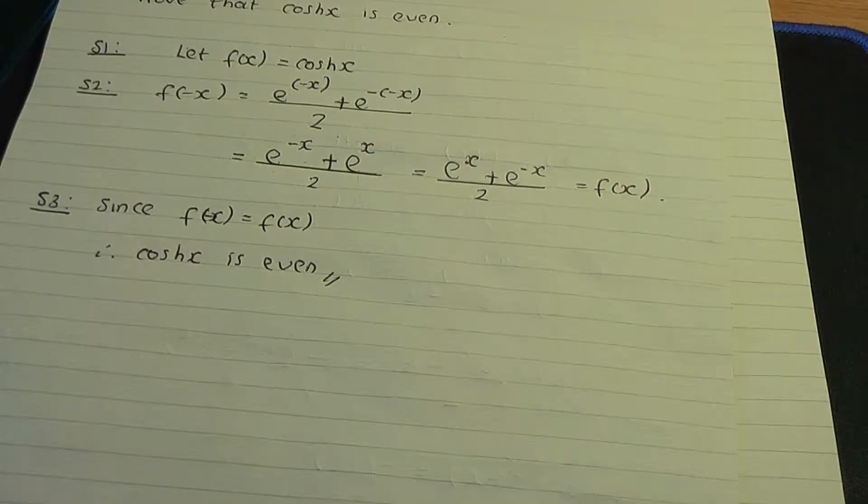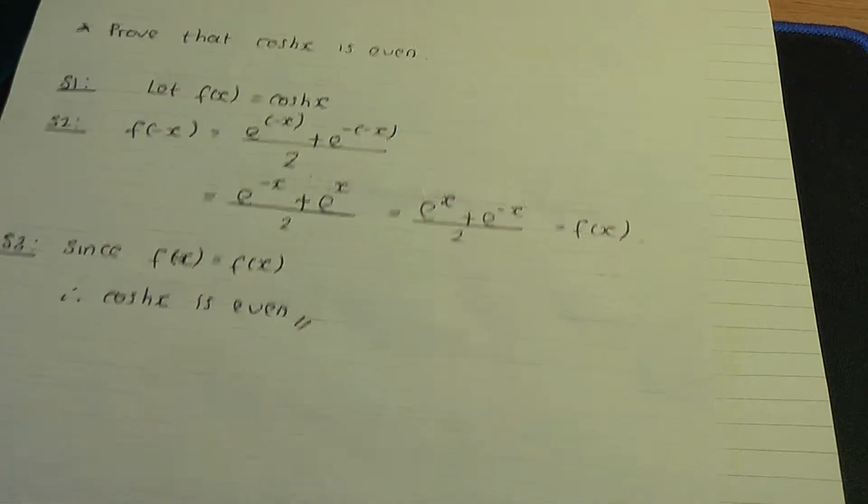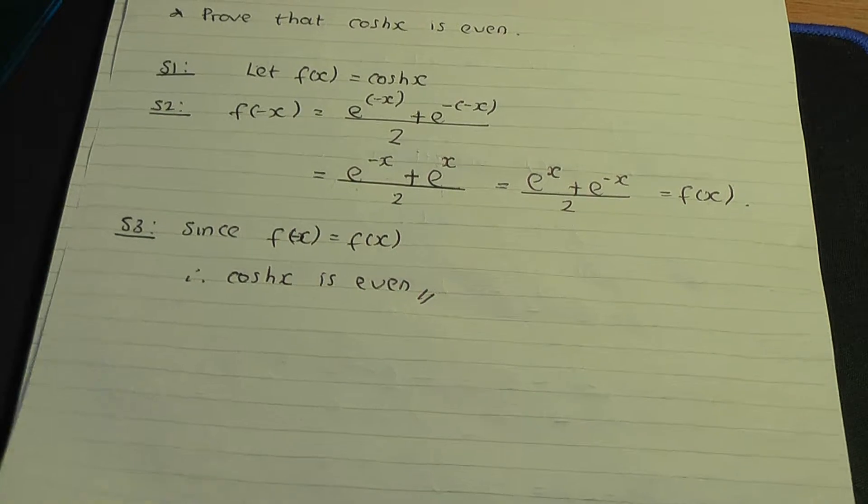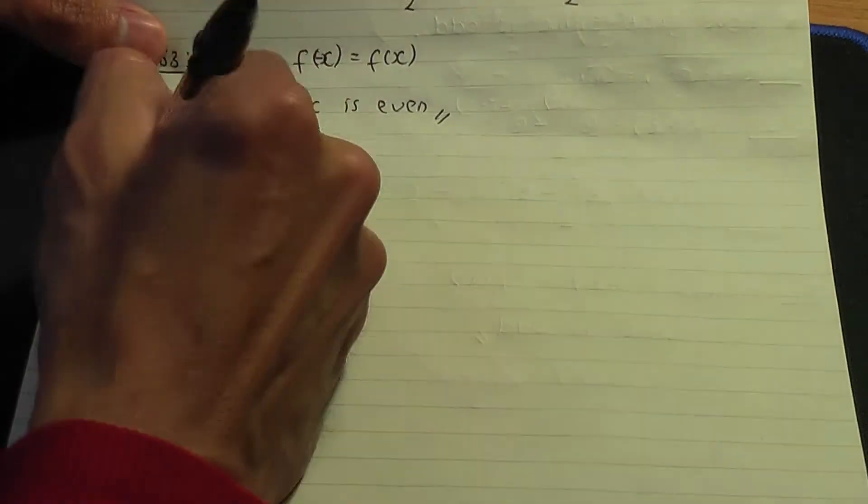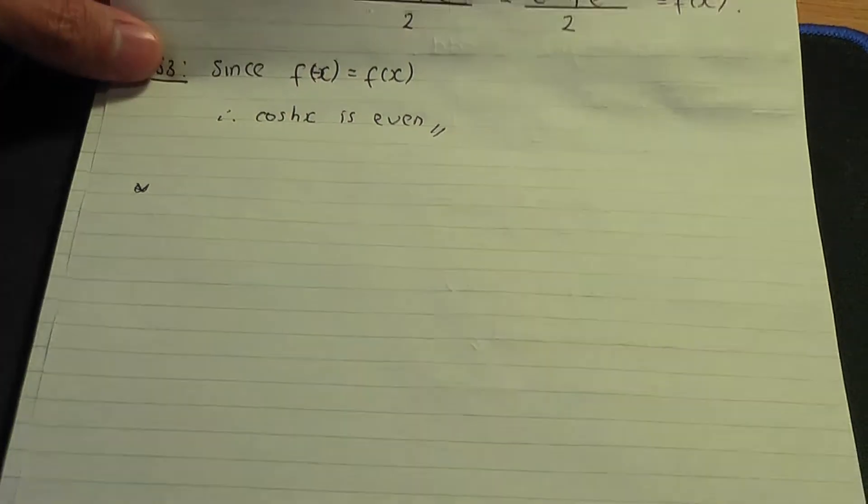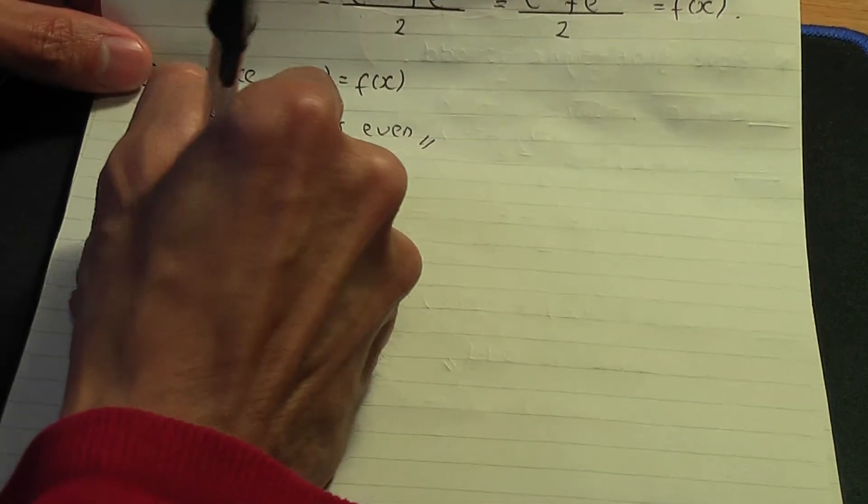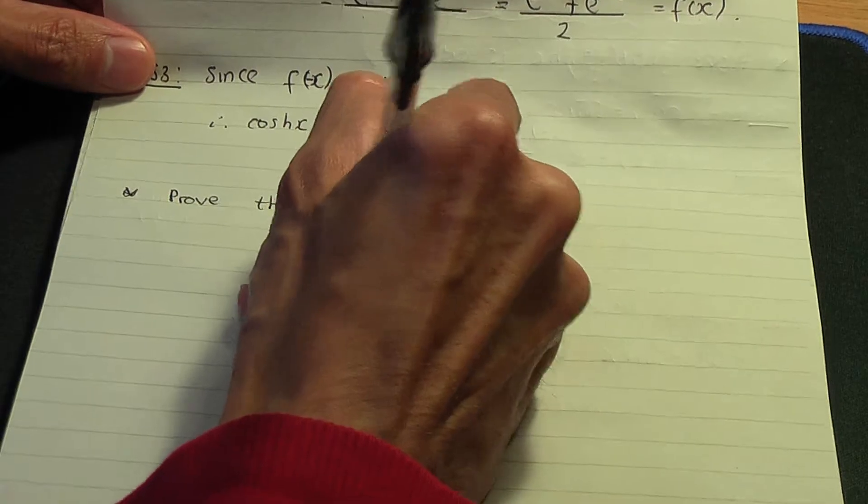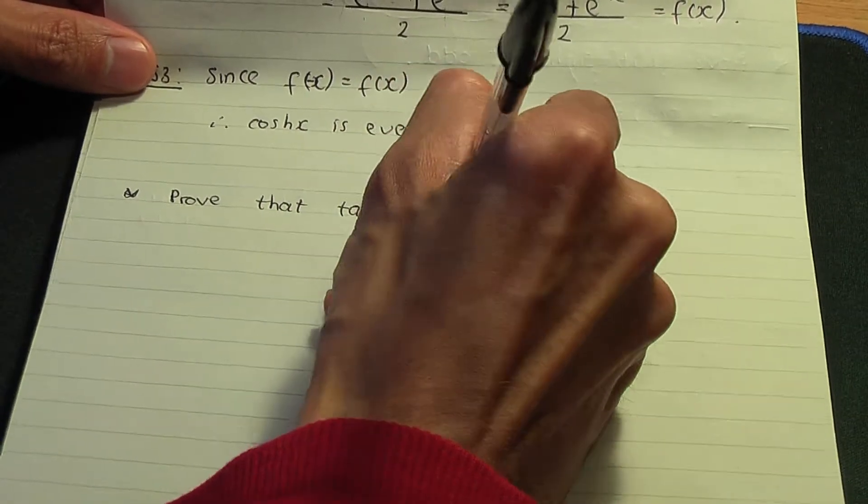I also said that hyperbolic tan is odd, so I'll go through the same steps to prove that hyperbolic tan is odd. Let me use this space over here. Let's prove that hyperbolic tan is odd.